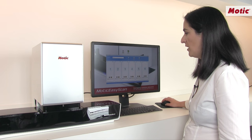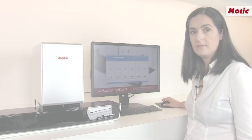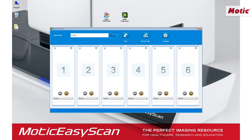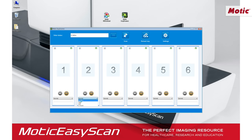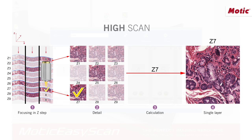For each slide we can select the magnification and the scanning mode. We can choose between four alternative scanning modes. The first option is the normal scanning mode — in this case, the system detects the focal plane on each field and captures the image. Then we have the high scanning mode, where the optics goes through several focal planes on each field but selects the one with more information.